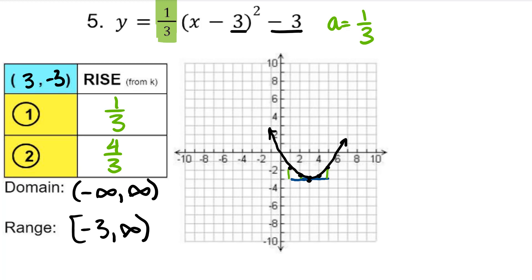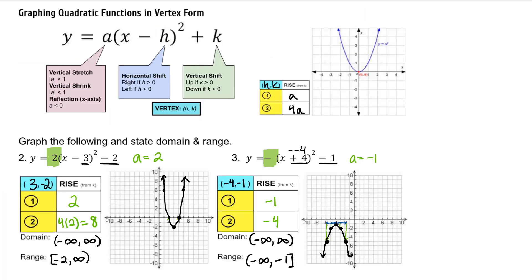And there's our answer. Being able to move one unit to the left or right and rising a, or two units to the left or right and rising 4a, can make graphing a parabola significantly more efficient. But you can always go back to a table of values if you get confused to check.